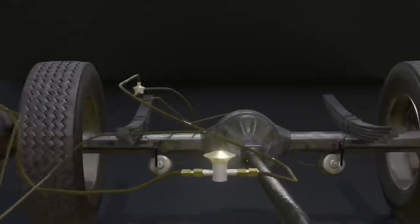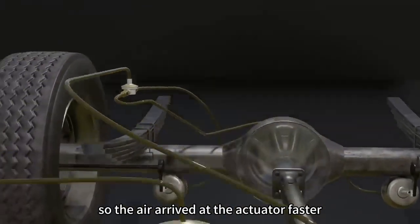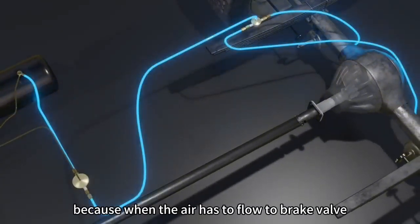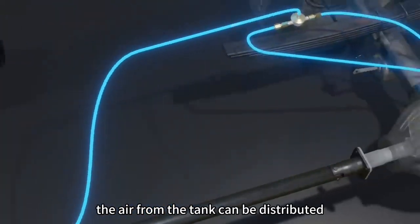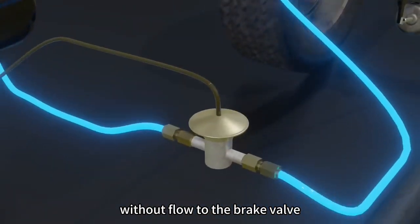We go to the next part, the relay valve. It functions to cut the air path, so the air arrives at the actuator faster. Because when the air has to flow to brake valve, it may occur a delay of braking. With this relay, the air from the tank can be distributed directly to the actuator without flowing to the brake valve.